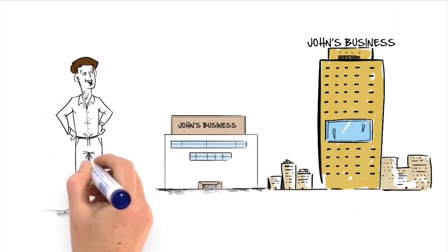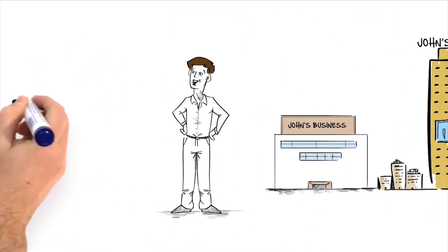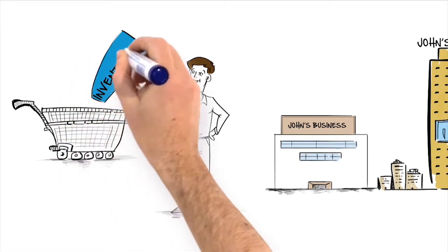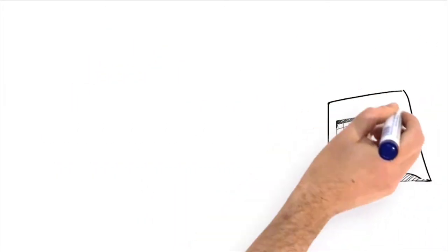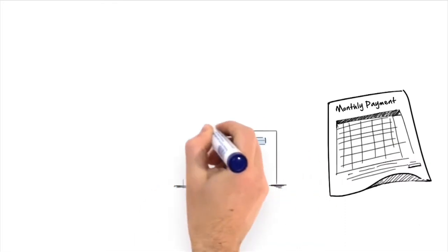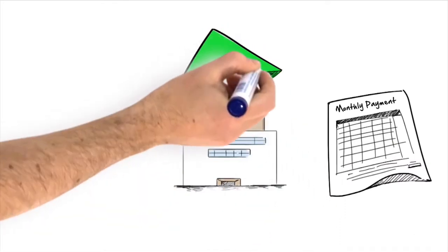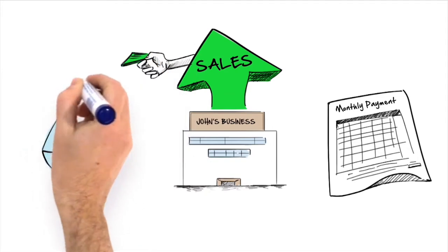John was able to expand his business and still had money left to buy inventory. He loves the fact that there are no hassles of sending monthly payments because for every time he makes a sale, a small portion of the credit card sale will automatically go towards repaying The Funding Tree cash advance.